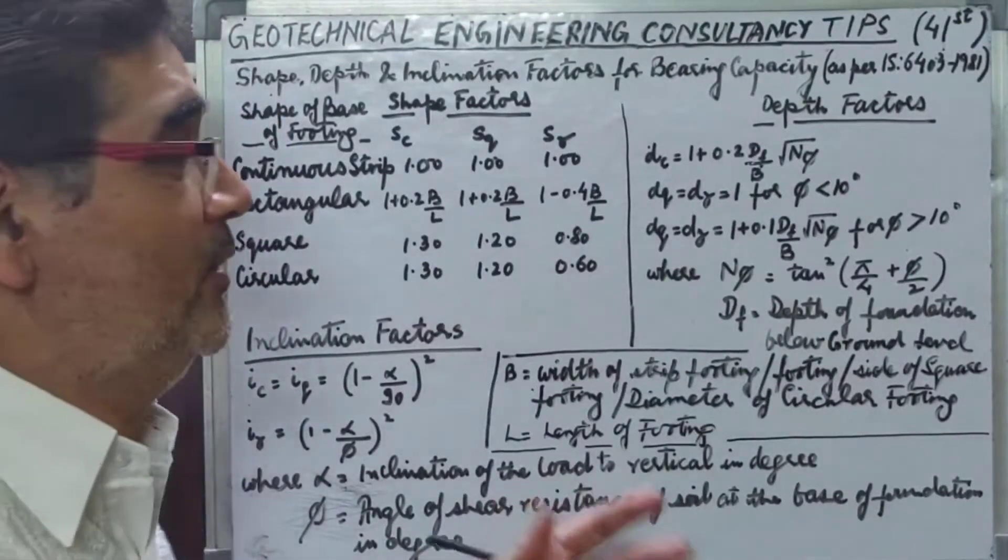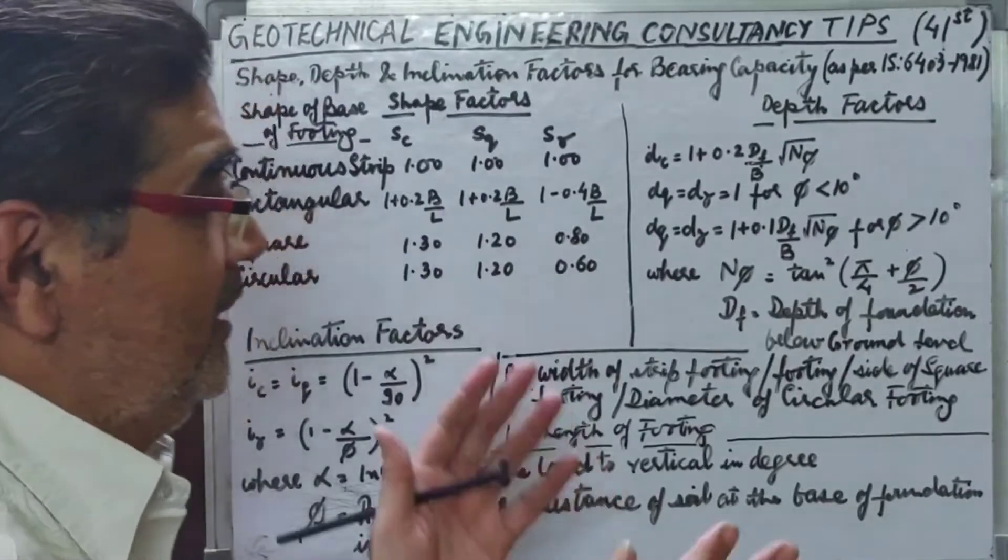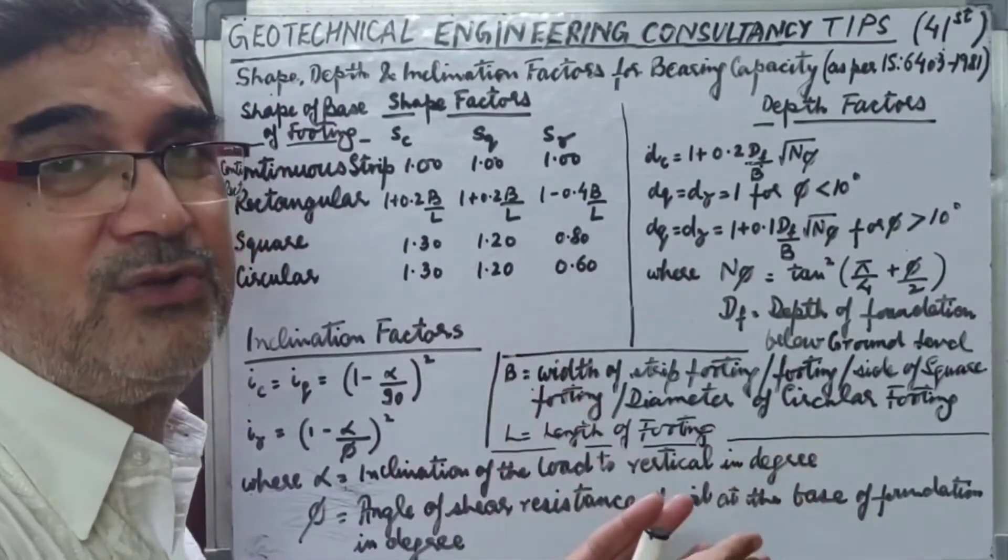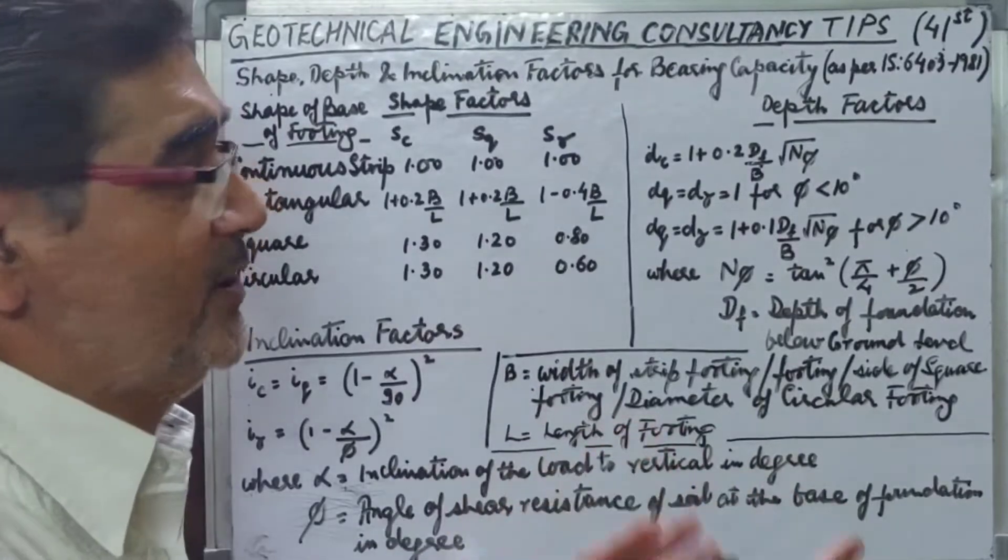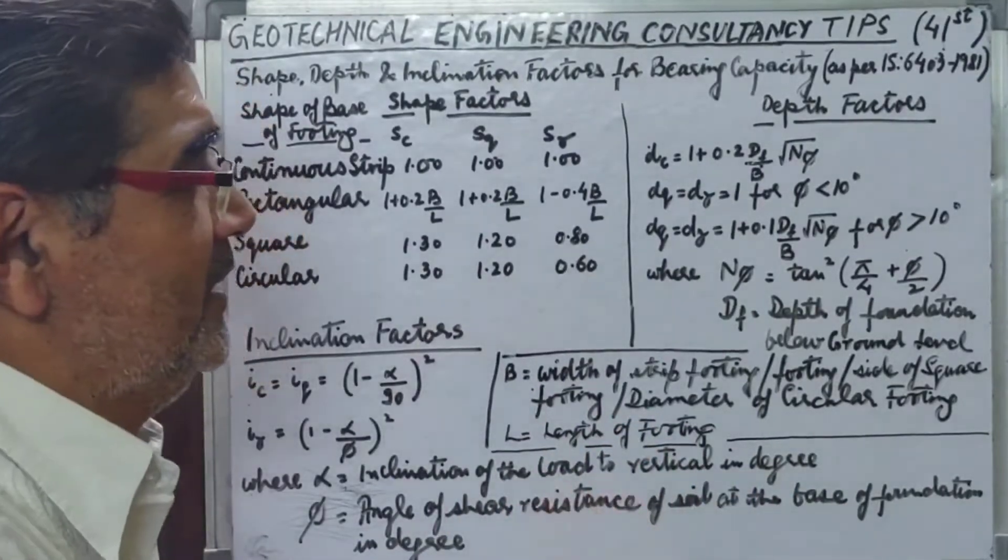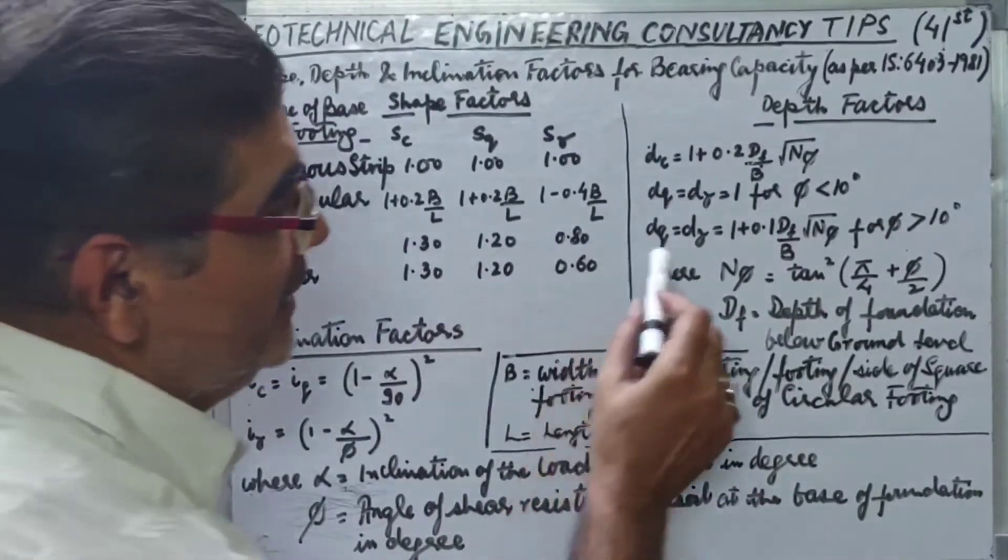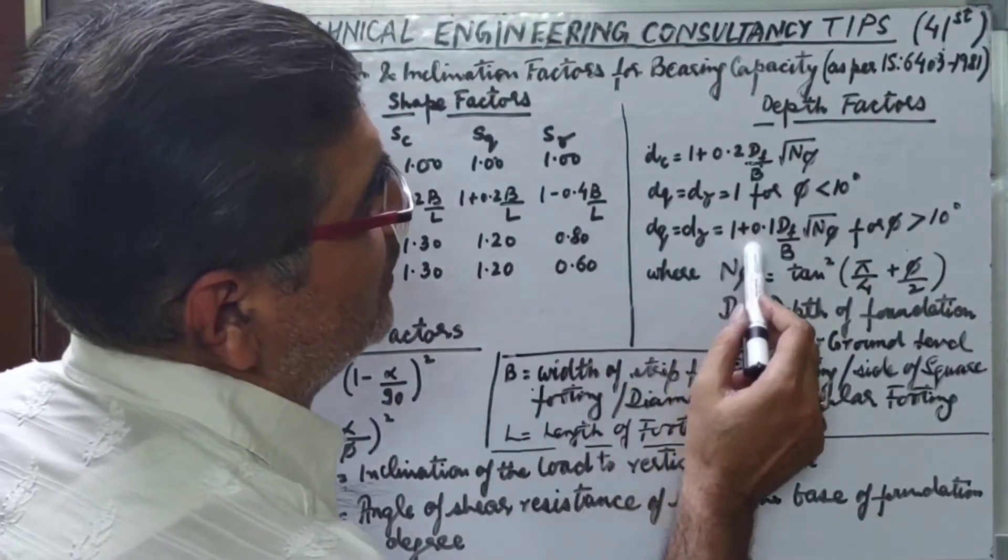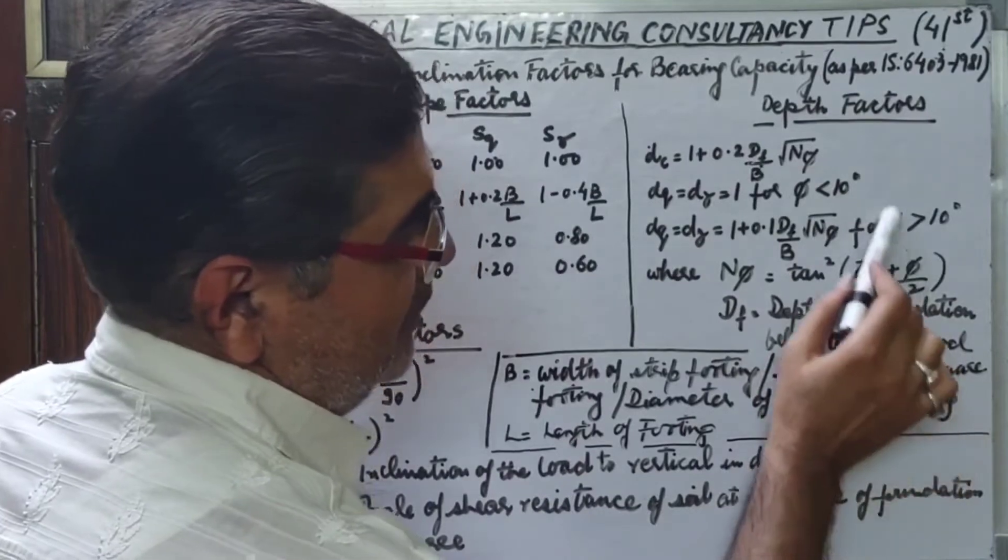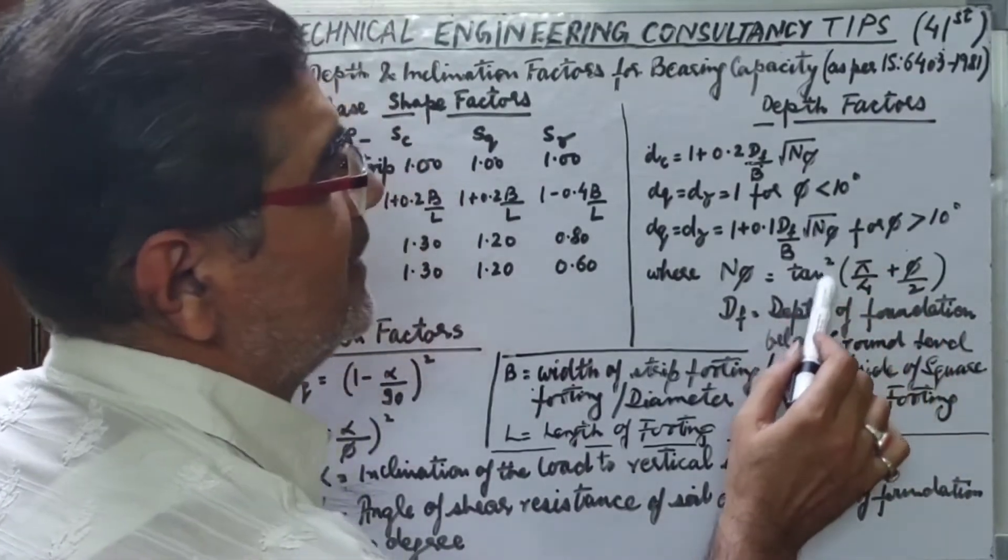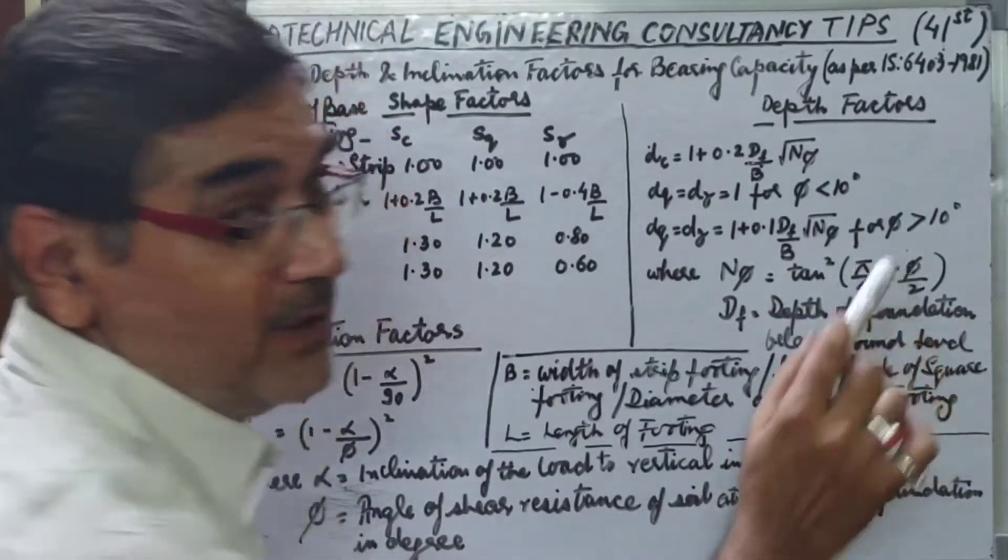After a proper triaxial test, for sandy soil or non-cohesive soil or coarse-grained soil, think about the value of angle phi. Dq is equal to D gamma is equal to 1 plus 0.1 Df upon under root N phi, which I have already explained can be taken as tan of 45 plus phi by 2.